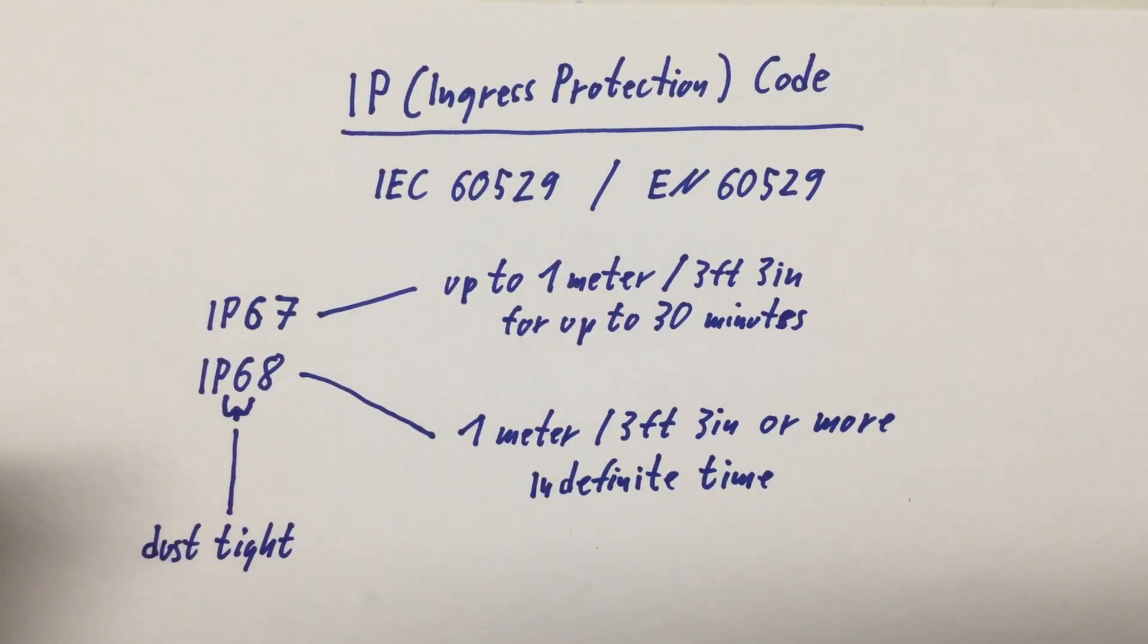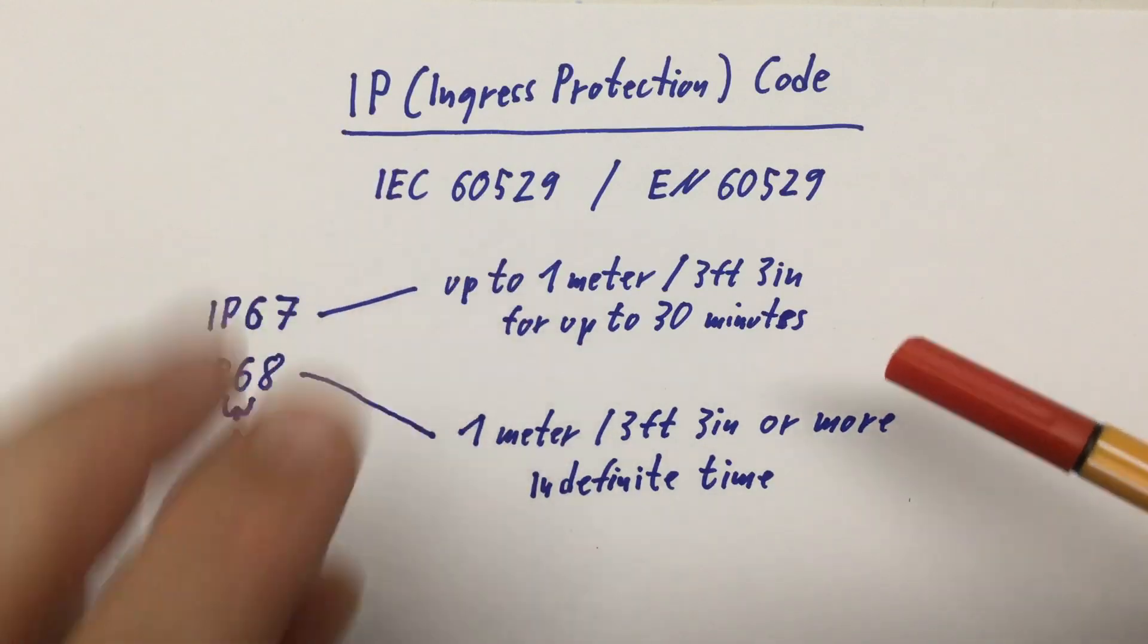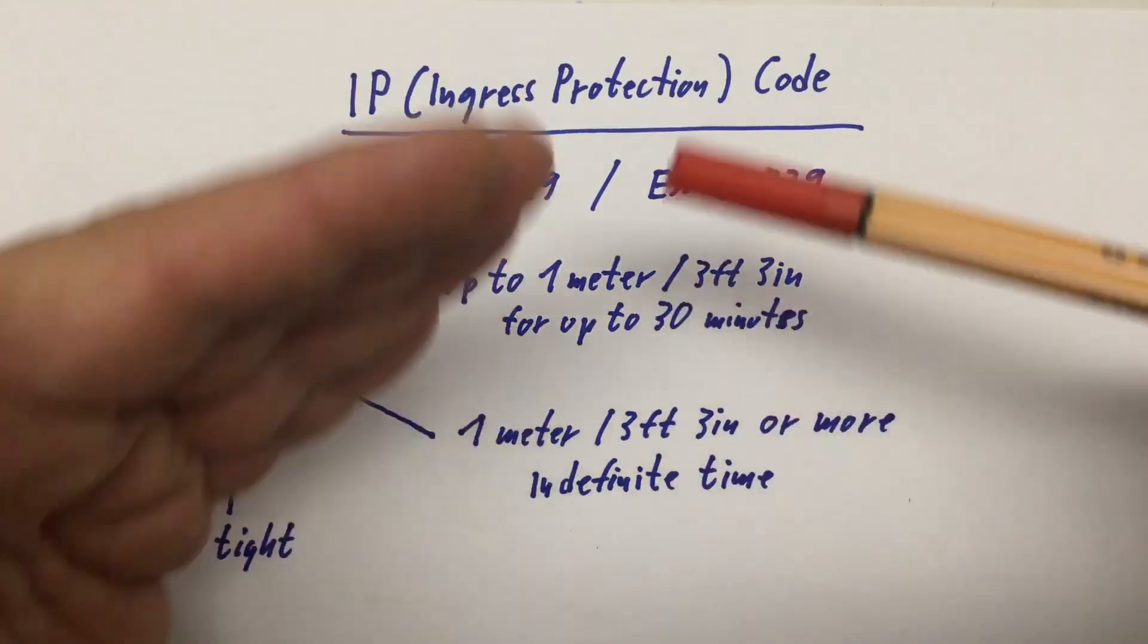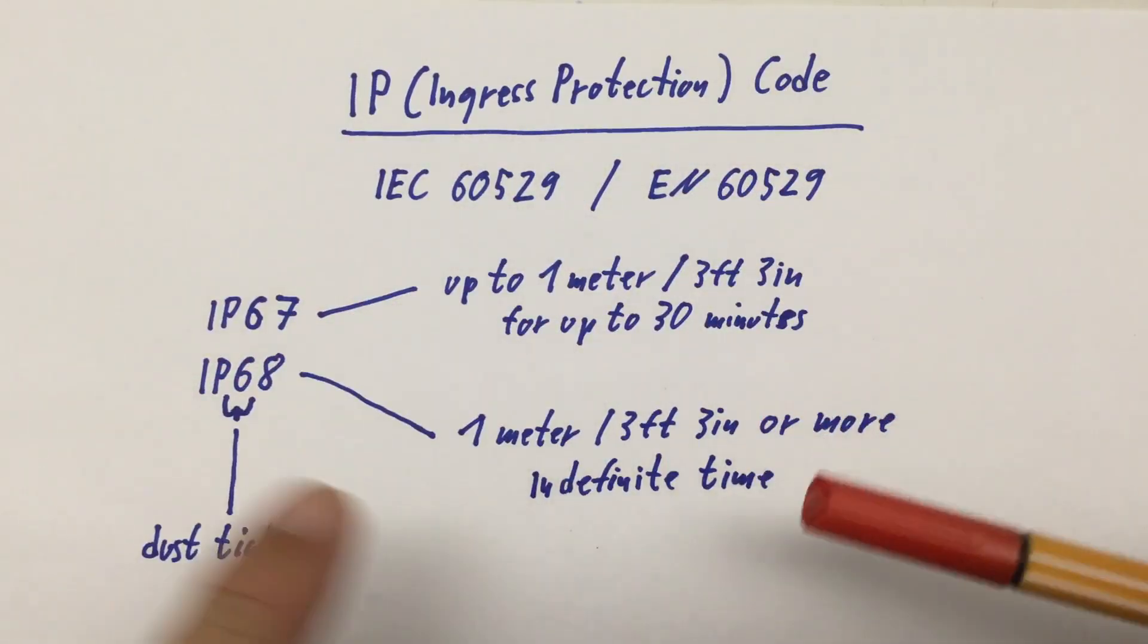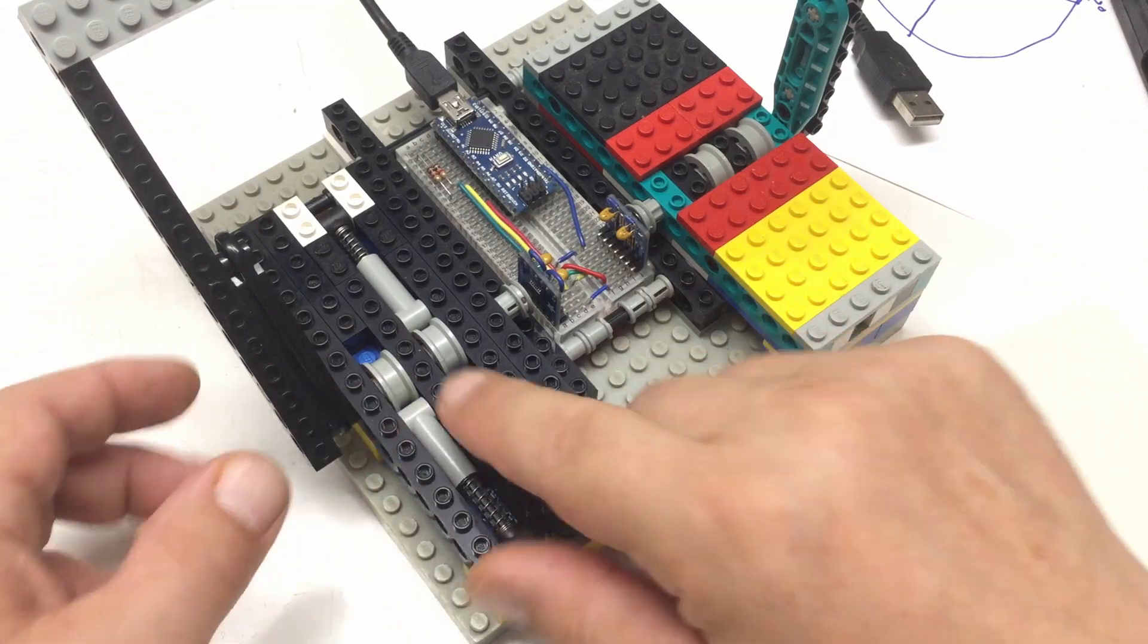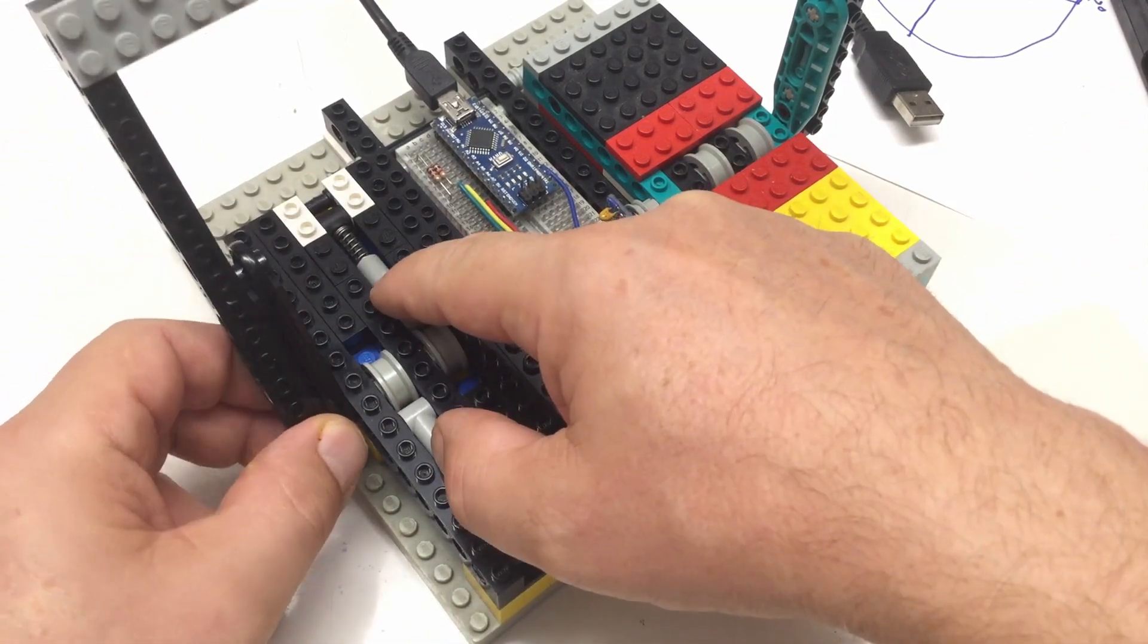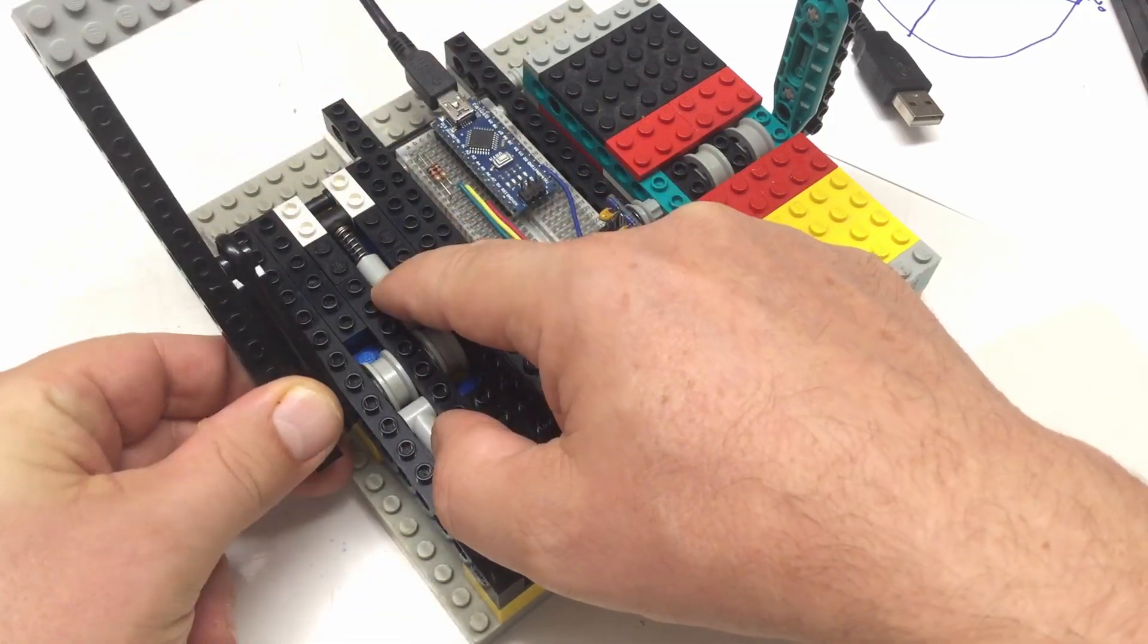To give you a few examples: your run-of-the-mill waterproof or water-resistant phone is probably IP67, while your submersible pump for that little nice fountain in your pond is probably IP68 up to one, two, three meters or whatever.